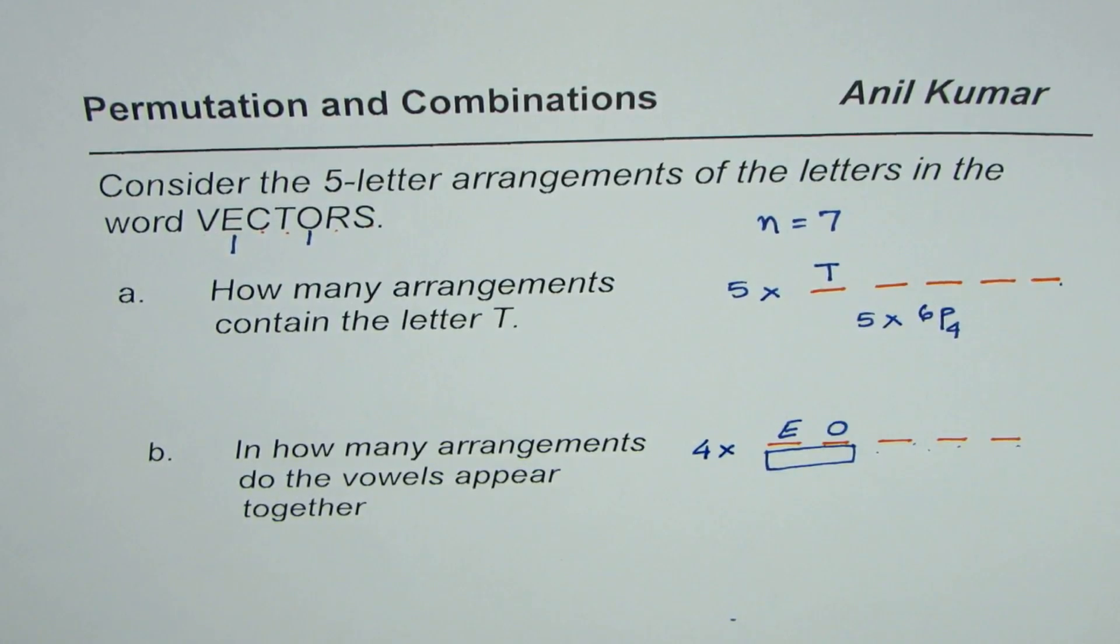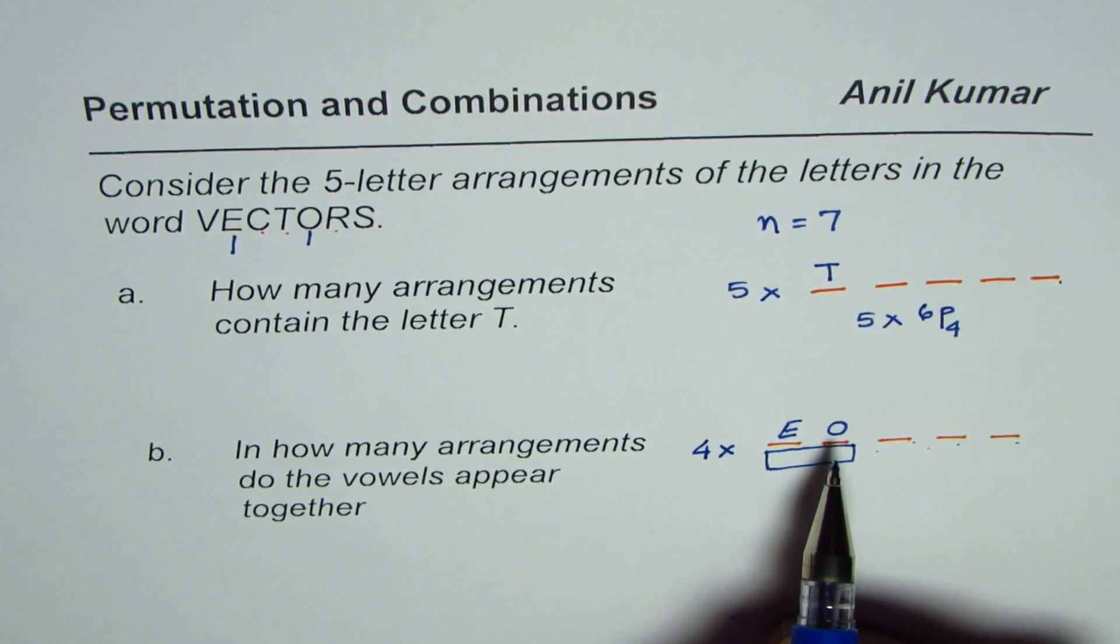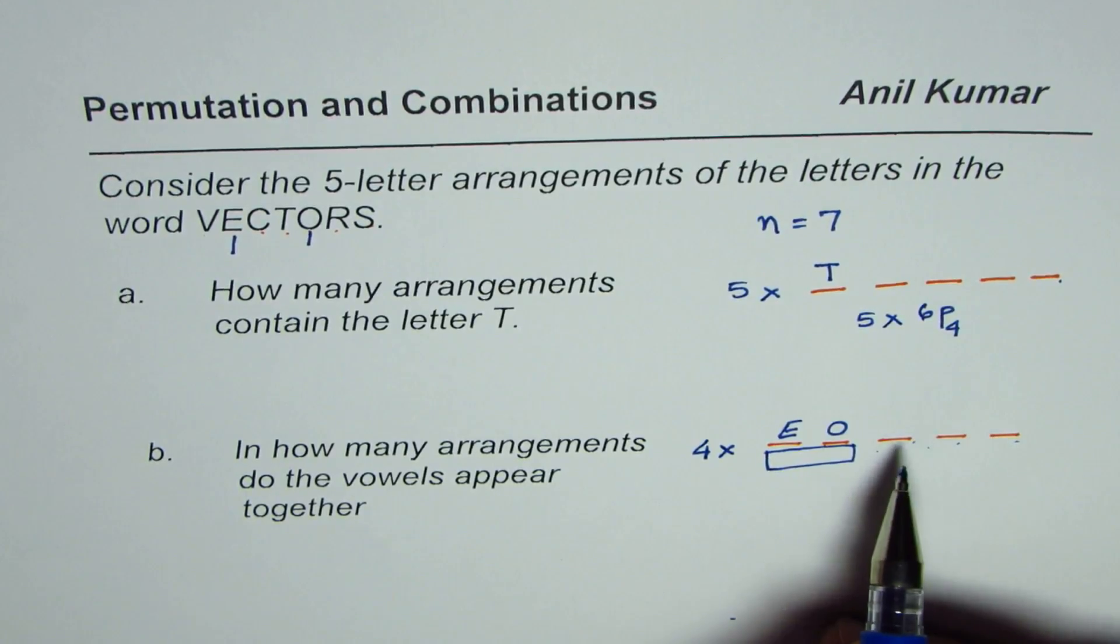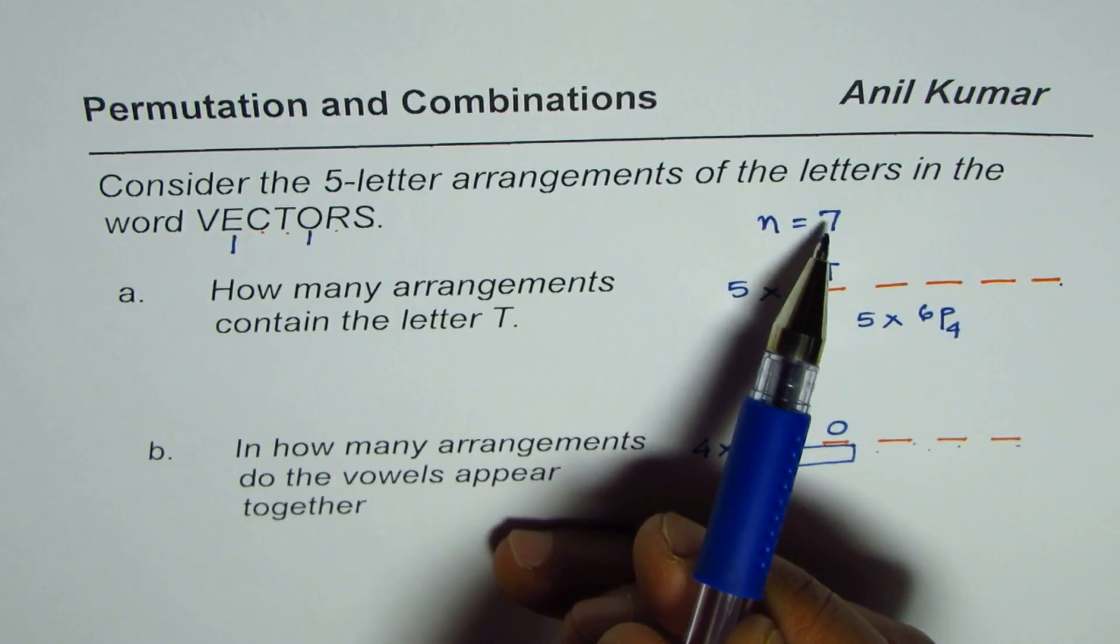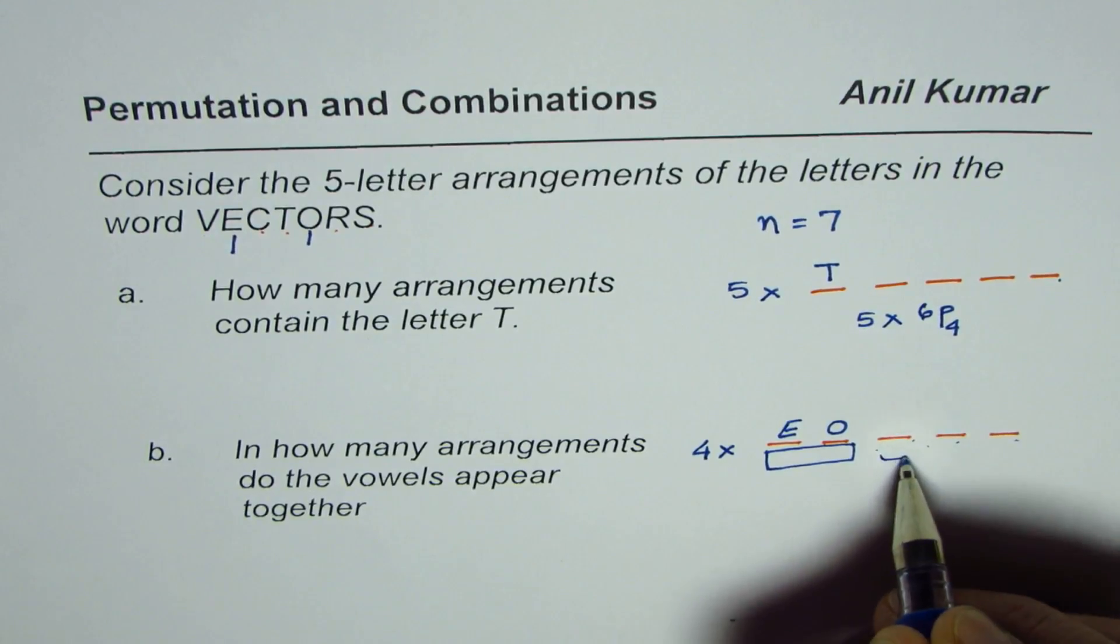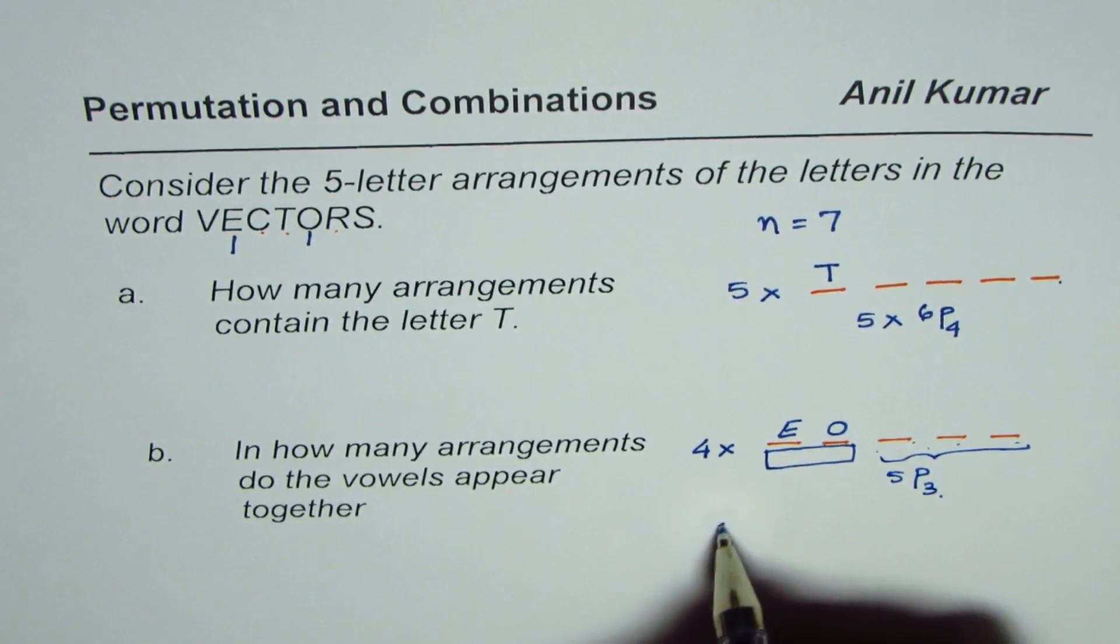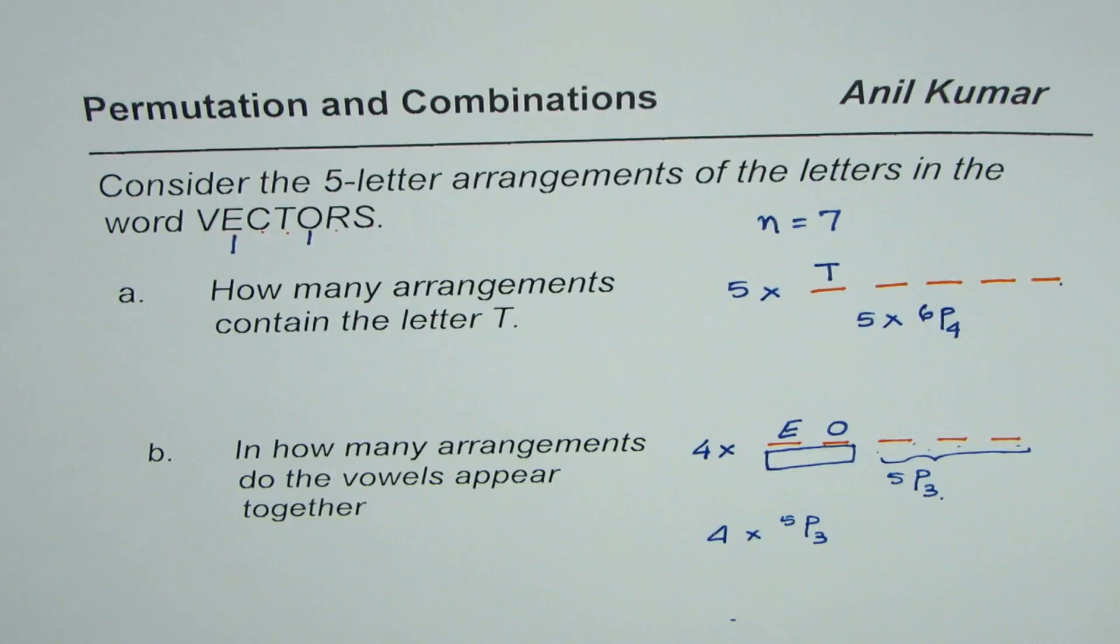Now for each position, there are three places to be filled by the remaining letters. Once you take out two from seven, you're left with five. So the ways to fill these three positions will be 5P3. So the total number of ways will be four times 5P3.